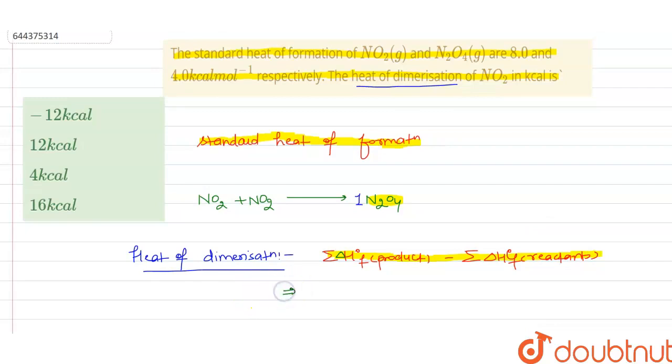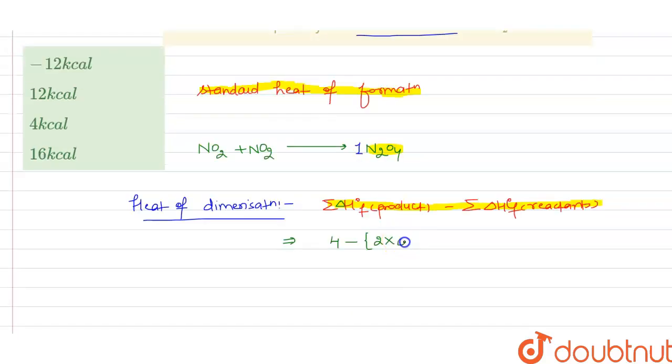Now we have given the enthalpy of formation of N2O4 as a product, that is 4 kilocalories, minus two molecules of NO2 whose standard heat of formation is given as 8. Now on solving it, we get minus 12 kilocalories.